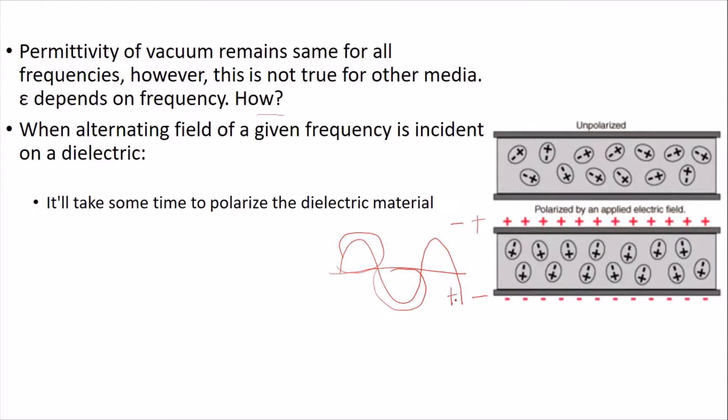When negative is here and positive is here, this orientation will try to change. Positive will try to come here, negative will try to come here, and likewise, positive will try to come here, negative will try to come here, for all these atoms and molecules. However, this transition from this polarization to this polarization, this transition takes some time.